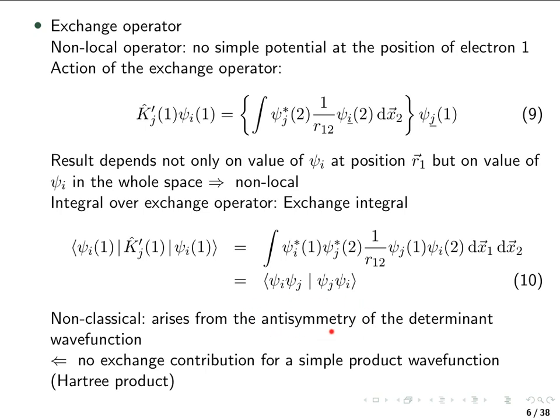So if you would use, instead of a Slater determinant, just a simple product wave function of spin orbitals — a so-called Hartree product — then you would not get an exchange contribution.